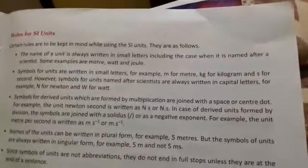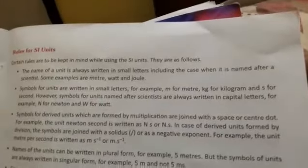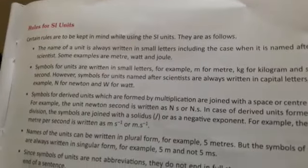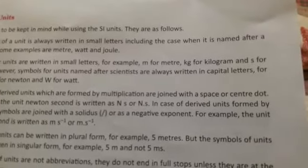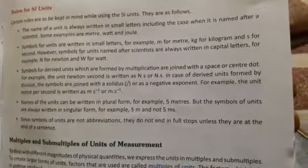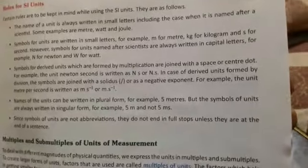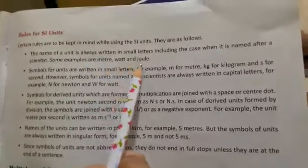Next topic is rules for SI units. How we will write down the SI unit? These are the rules. Certain rules are to be kept in mind while using the SI unit. They are as follows. First rule is the name of unit is always written in small letter, including the case when it is named after a scientist. Some examples are meter, see small letter, watt and joule.